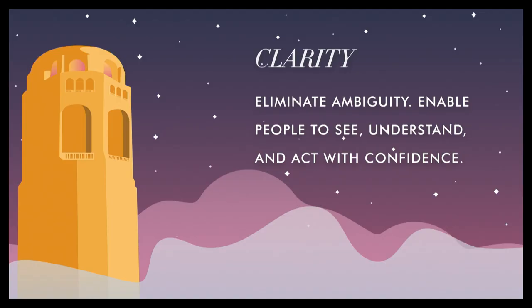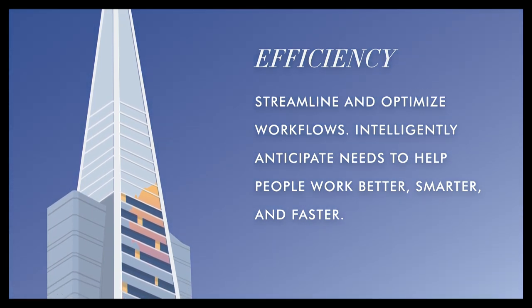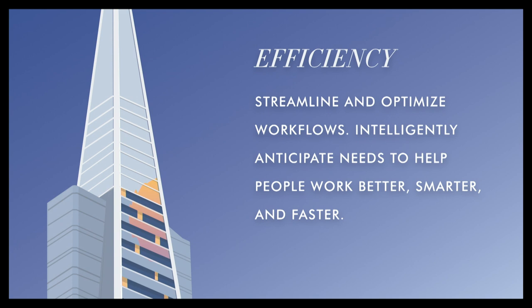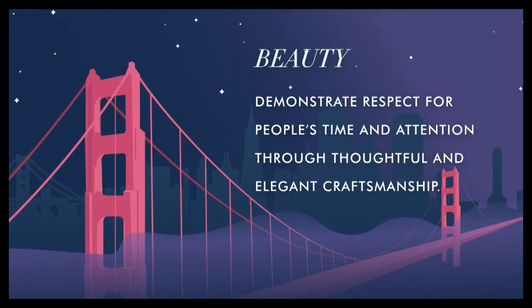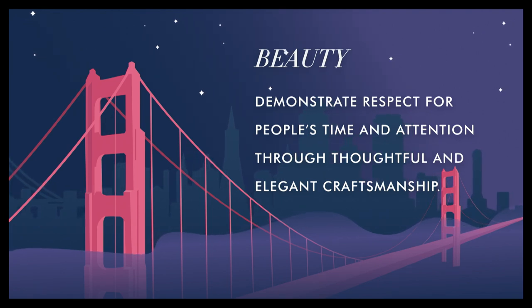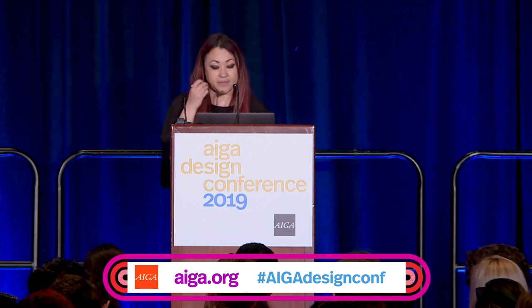Clarity is about eliminating ambiguity, enabling people to see, understand, and act with confidence. The second principle is efficiency — streamlining and optimizing workflows, intelligently anticipating needs to help people work better, smarter, and faster. Consistency is about creating familiarity and strengthening intuition by applying the same solution to the same problem. And the fourth, that Nathan mentioned, is beauty — demonstrating respect for people's time and attention through thoughtful and elegant craftsmanship. We had these beautifully displayed posters all over the office, created by our intern Miles Thompson, with illustrations based on monuments in San Francisco. We even gave them out as postcards at events.